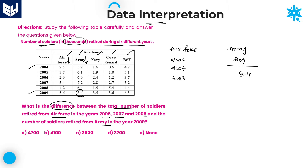Write down Army 2009 as 8400. Each value is in terms of 1000, so you multiply by 1000. Coming to Air Force: the 2006 value is 2.9, the 2007 value is 5.4, and the 2008 value is 4.2.